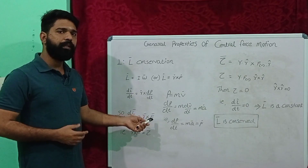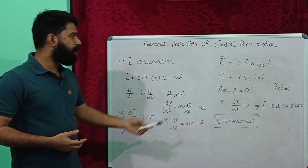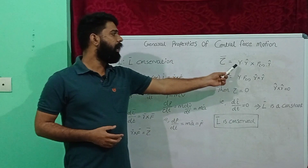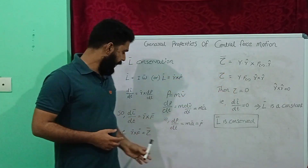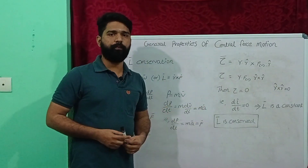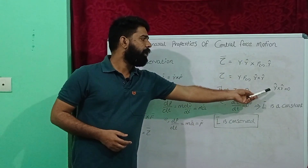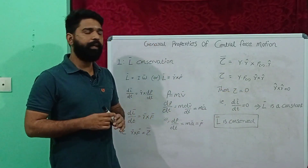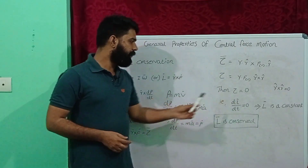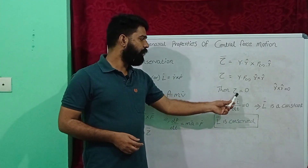R cross F is the torque. This can be rewritten as R cross R-hat, because vector R can be represented by R dot R-hat, and the force vector can be represented by F(R) dot R-hat. So R-hat cross R-hat equals zero, which means the torque equals zero. Since torque equals dL/dt, and torque is zero, we get dL/dt equals zero.